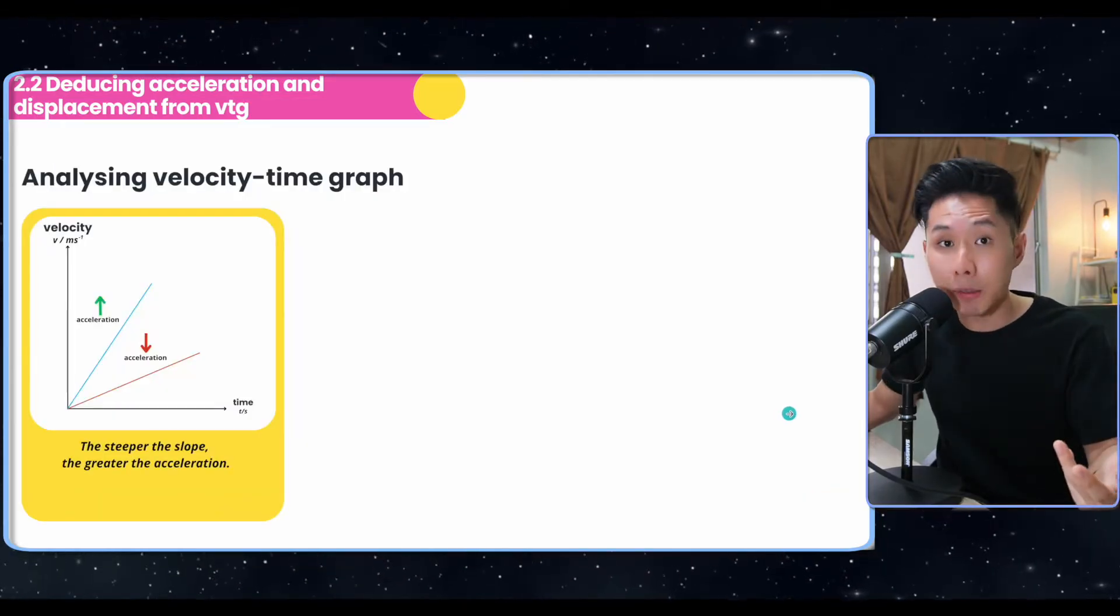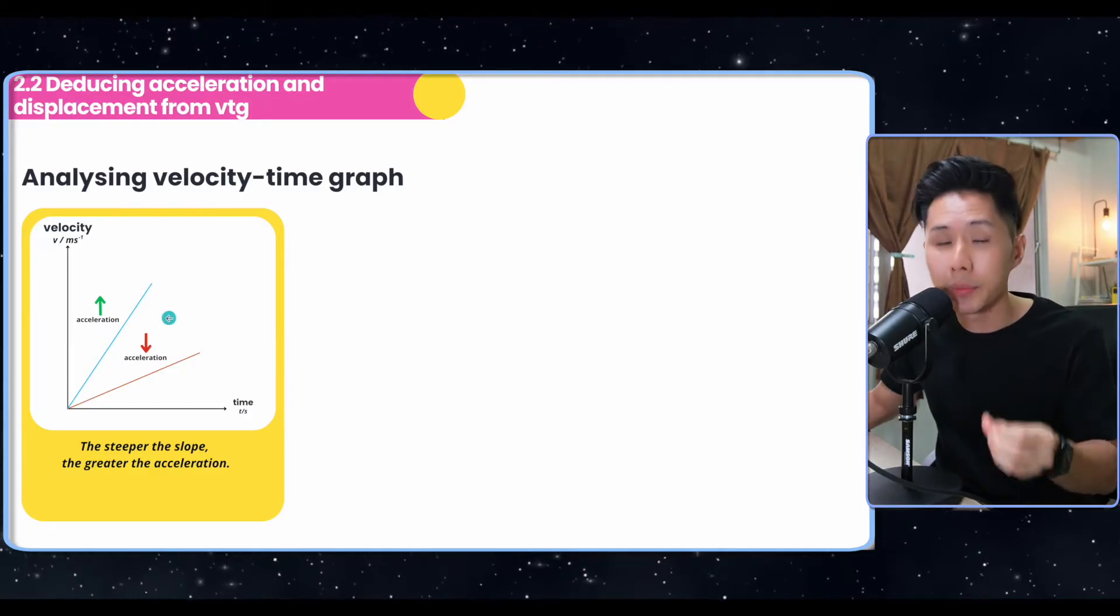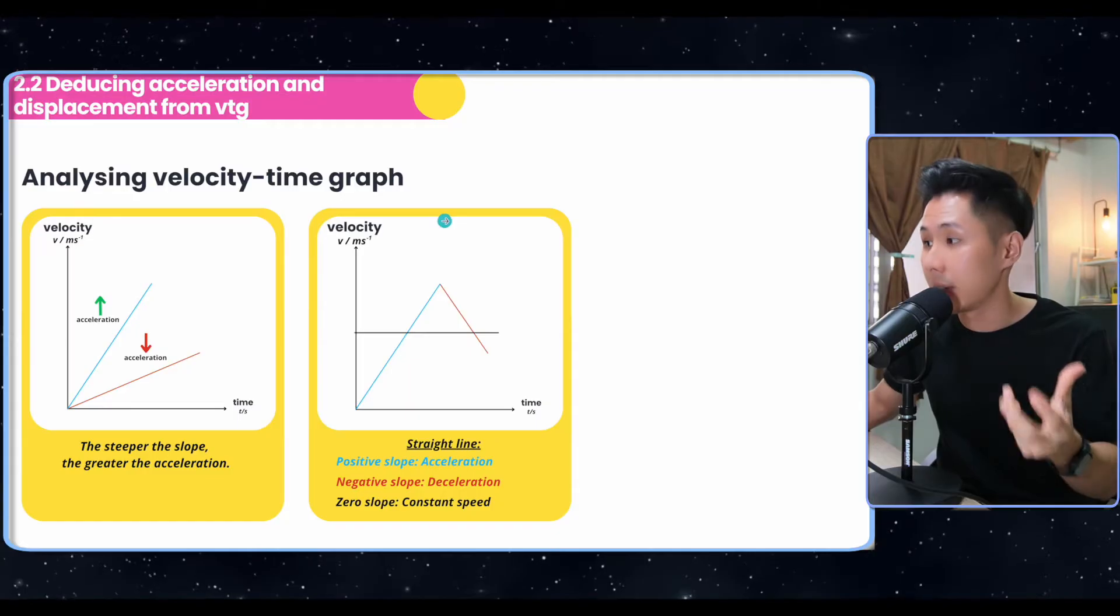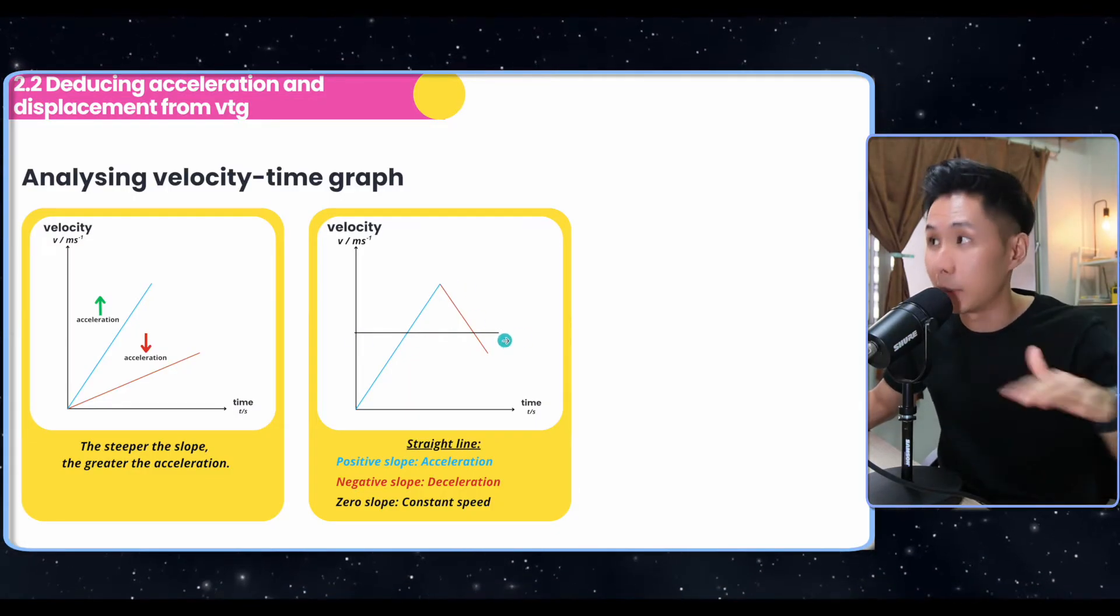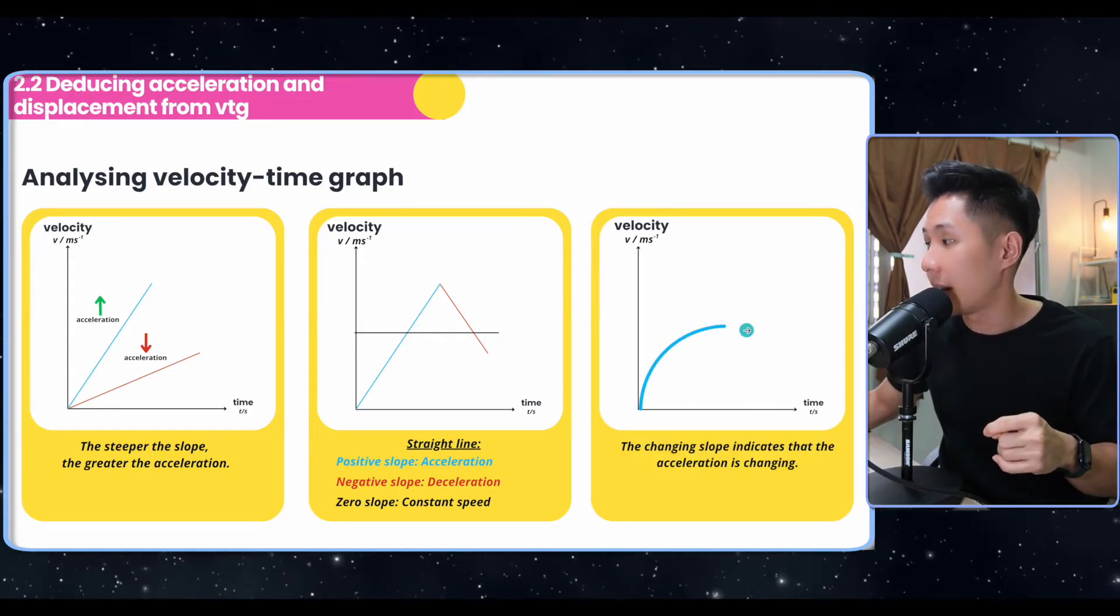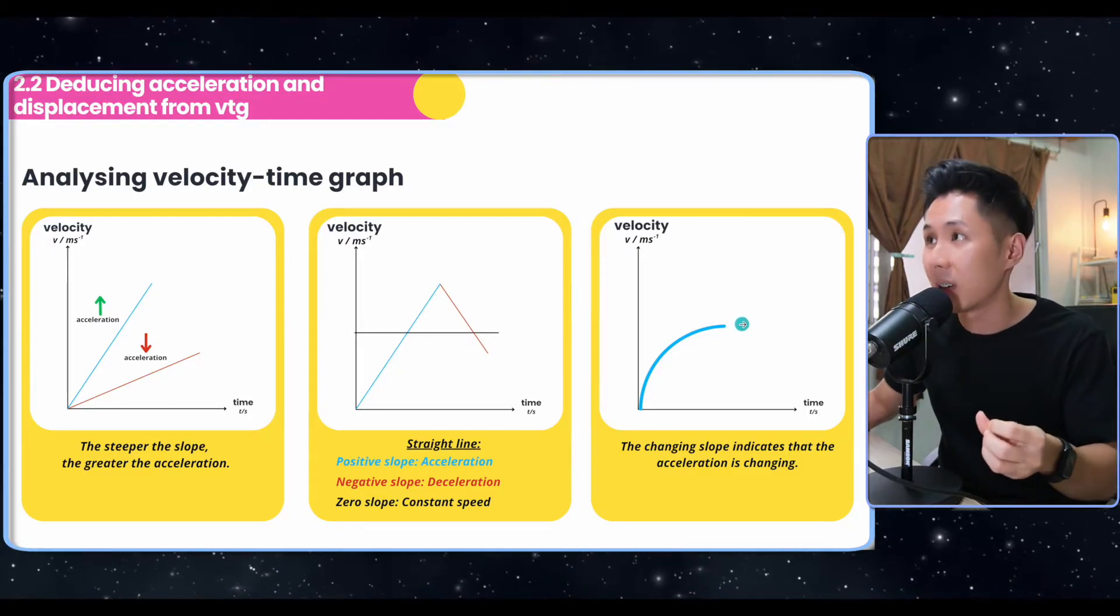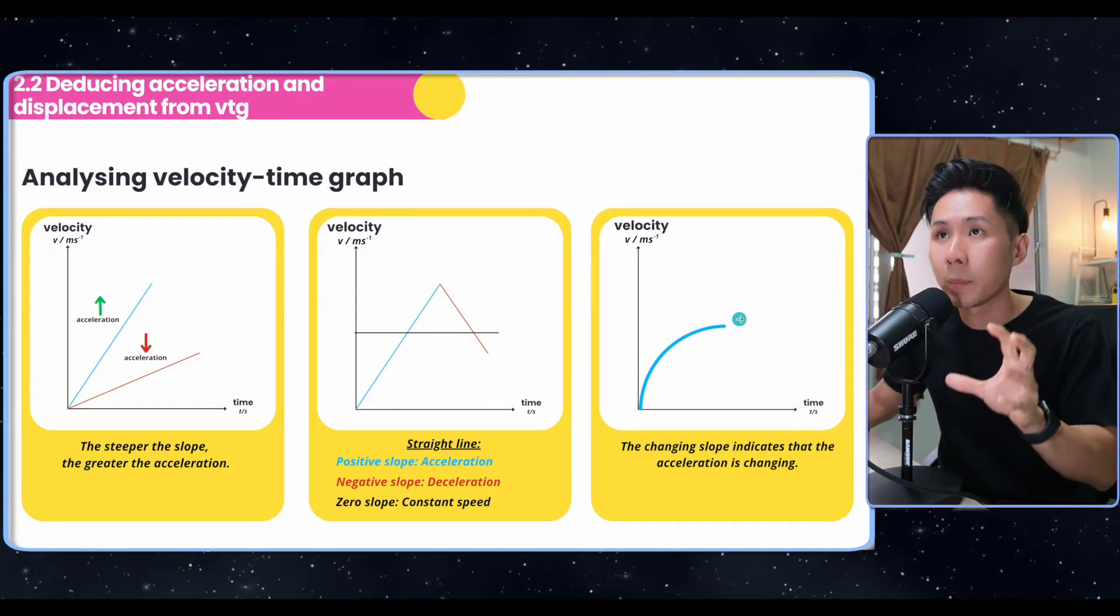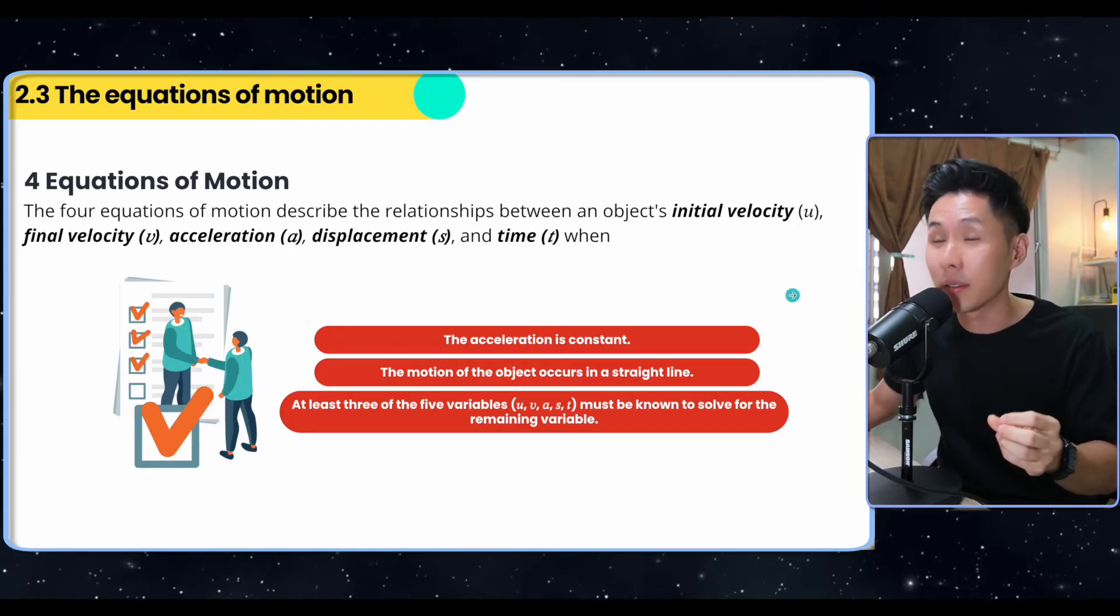So just to summarize, this is how velocity time graph is. The steeper the slope, the higher the acceleration. The positive slope represents acceleration. The negative slope represents deceleration. And no slope is constant speed. The speed doesn't change, but the object is still moving. Lastly, the changing slope indicates that the acceleration is changing. If you watch my first video, you'll have noticed that they look the same as displacement time graph. So in this case, it's just the quantities that are different.